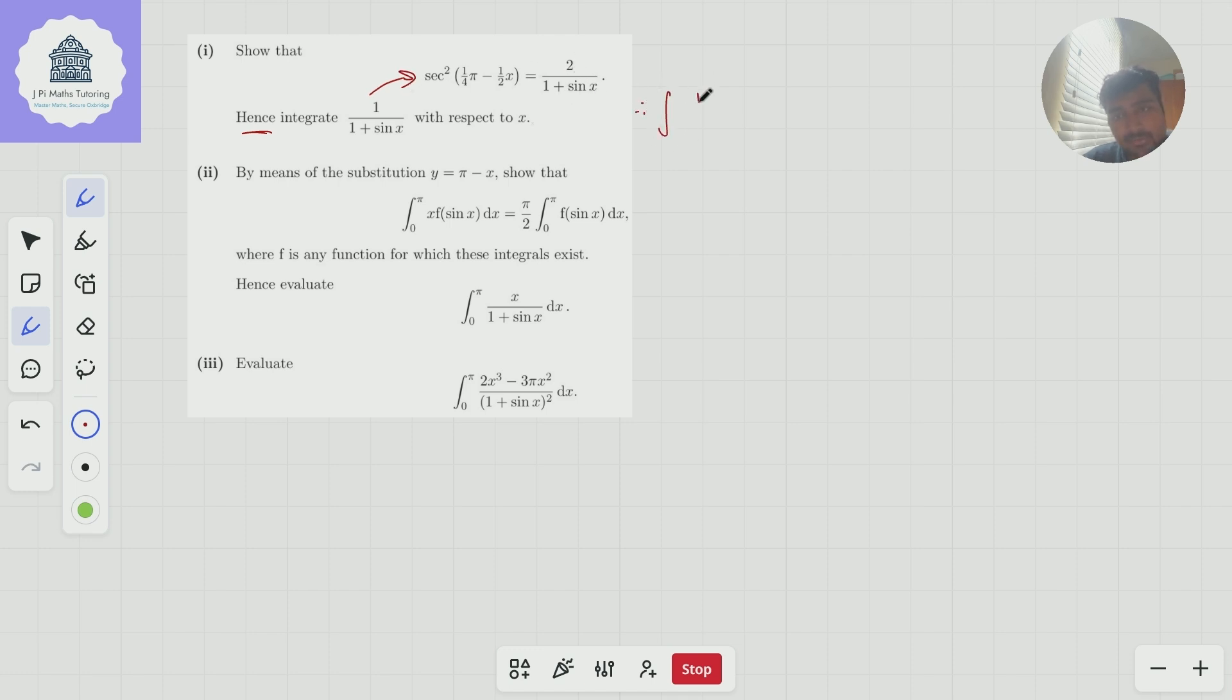Therefore the integral of one over one plus sine x dx is just equal to a half times the integral of sec squared of a quarter pi minus a half x dx. And thankfully, this is a very nice integral, sec squared integrates to tan. So this is just going to equal minus tan of a quarter pi minus a half x plus c. That's part one.